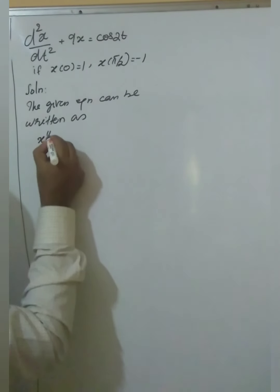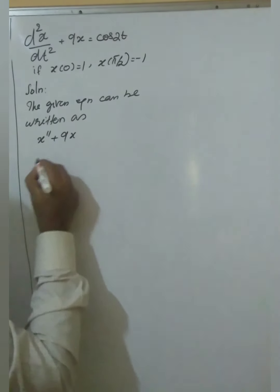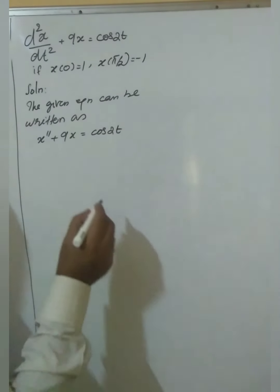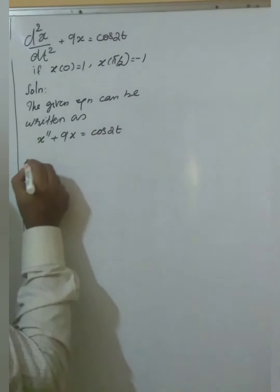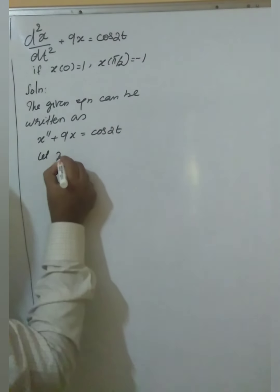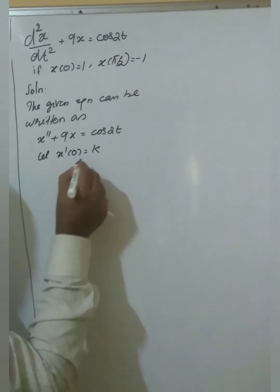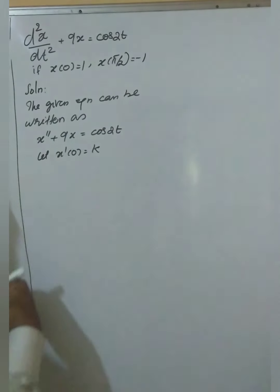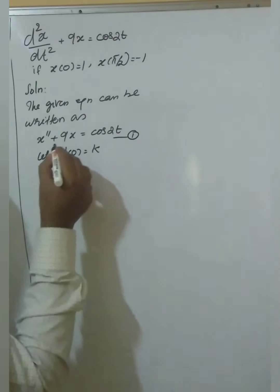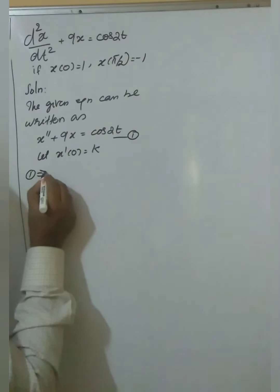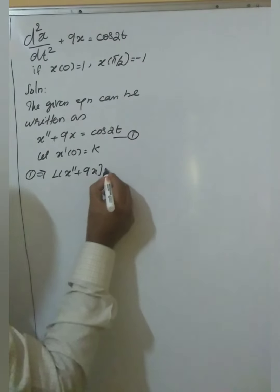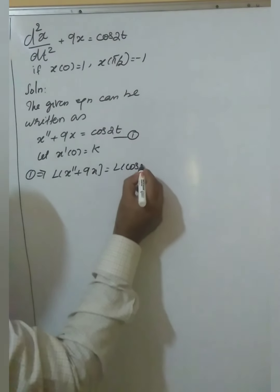The equation can be written as x'' plus 9x equals cos 2t. Let x'(0) equal to k, because x'(0) is not given. This is equation number 1. Taking Laplace on both sides: L of x'' plus 9x equals L of cos 2t.